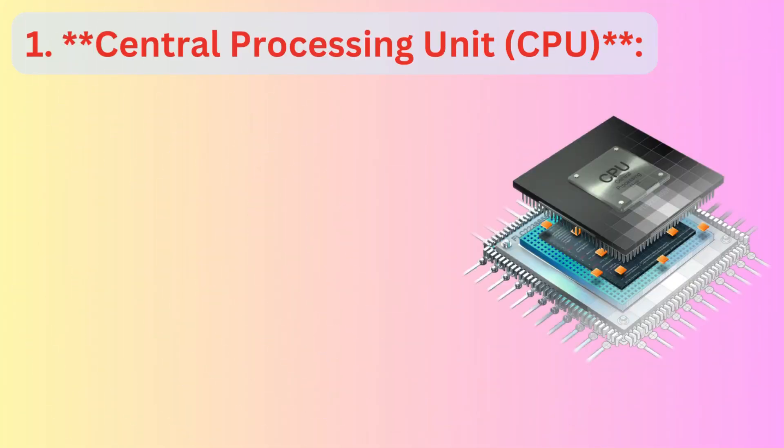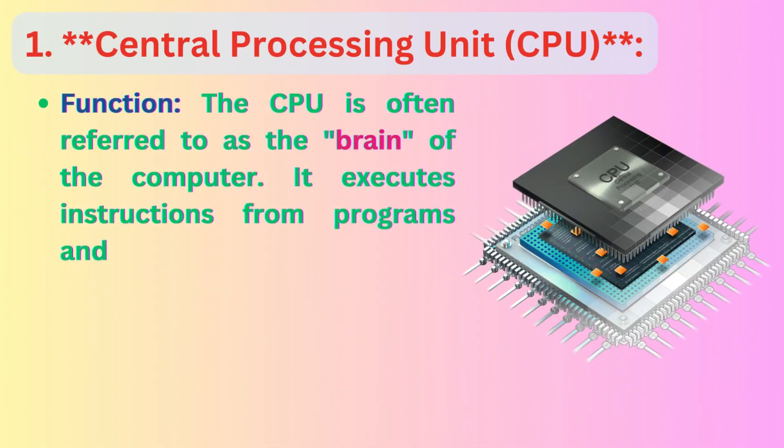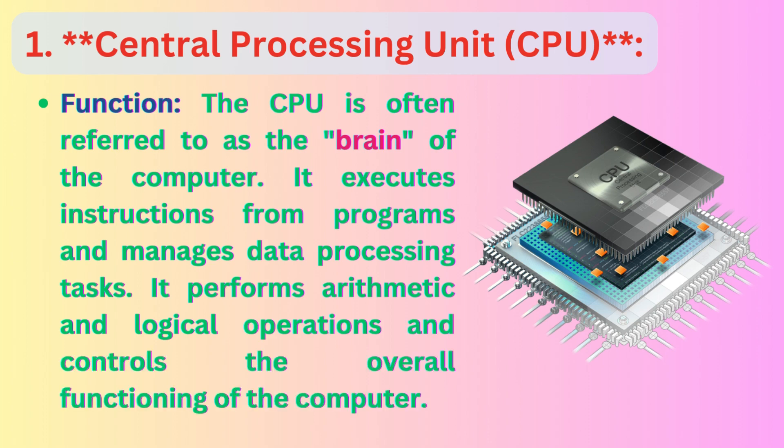1. Central Processing Unit, CPU. Function: the CPU is often referred to as the brain of the computer. It executes instructions from programs and manages data processing tasks. It performs arithmetic and logical operations and controls the overall functioning of the computer.